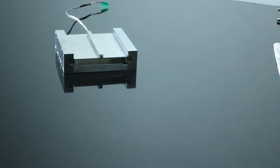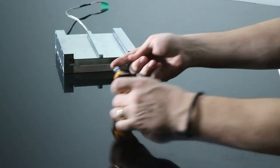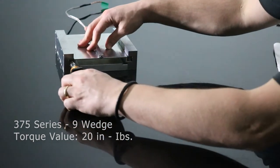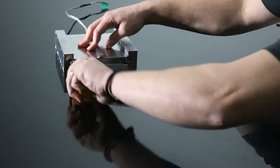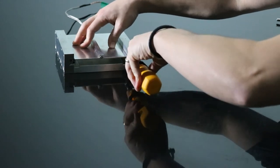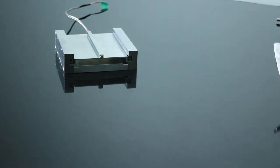When both ice locks are engaged, then proceed to torque the ice lock to the appropriate value, which is 20 inch-pounds for our 375 series. If you are working with our 250 series, the appropriate value is 12 inch-pounds.